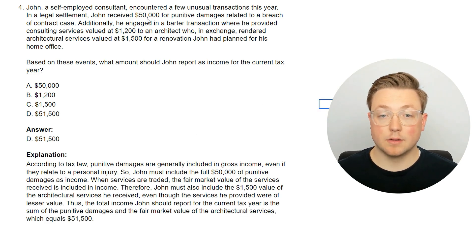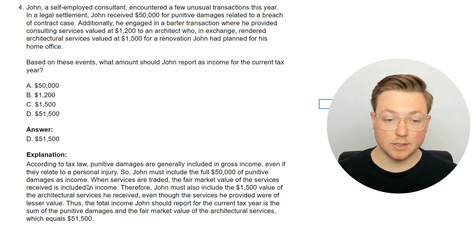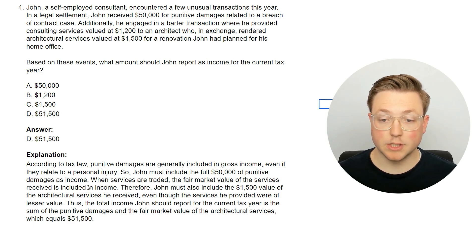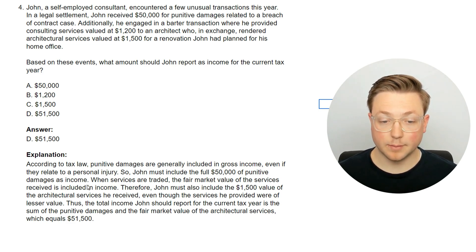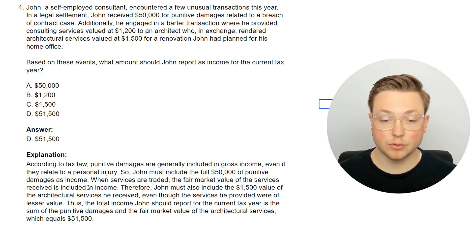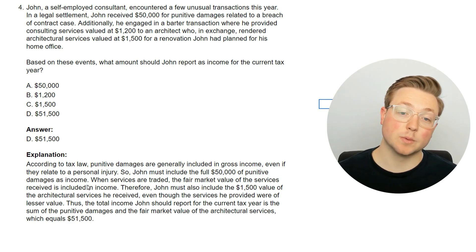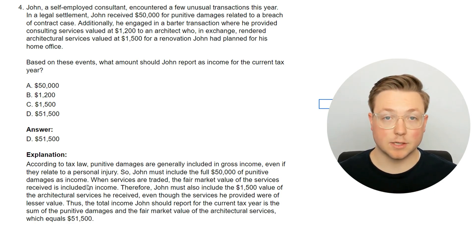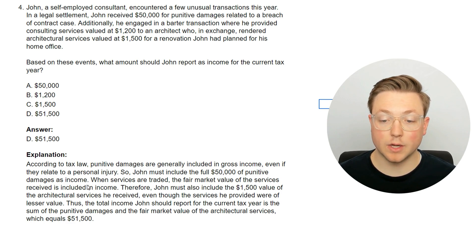Here's the answer. The $50,000 of punitive damages is taxable, and then the value of the renovation is taxable. According to tax law, punitive damages are generally included in gross income, even if they relate to a personal injury. So John must include the full $50,000 of punitive damages as income. When services are traded, the fair market value of the services received is included in income. Therefore, John must also include the $1,500 value of the architectural services he received, even though the services he provided were of lesser value at $1,200. The total income John should report is $51,500.